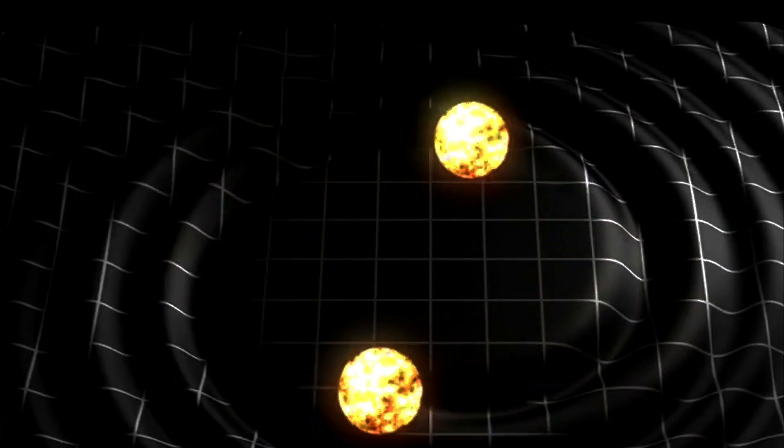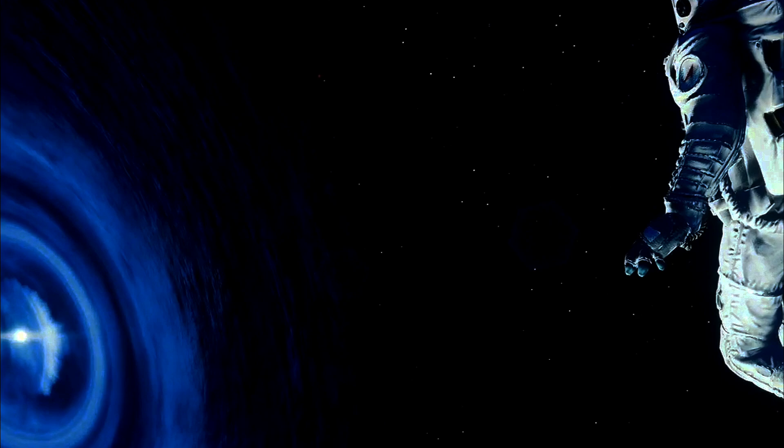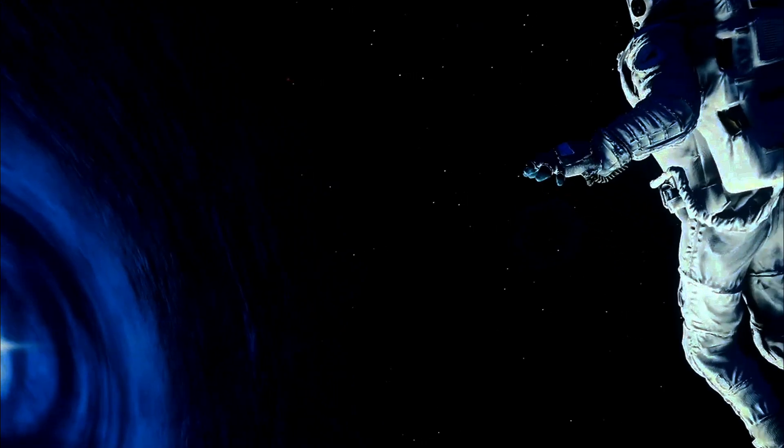According to general relativity, time is not a constant, but a variable that can be stretched and warped by gravity. Imagine space and time as a fabric, and massive objects like stars and planets create dents and curves in this fabric. This warping of spacetime alters the passage of time itself. For instance, time runs slower near a massive object like a black hole compared to a less massive region of space. This phenomenon is known as time dilation.